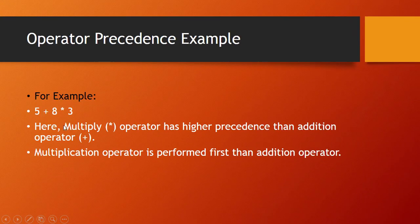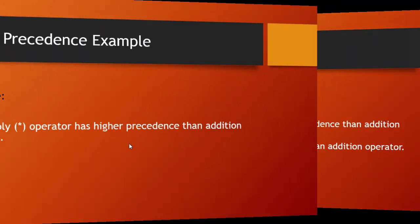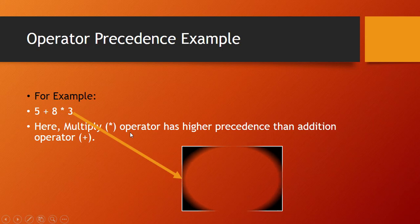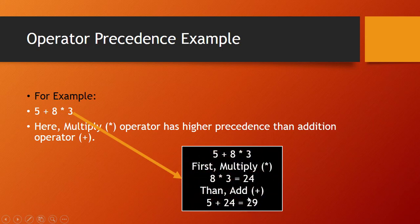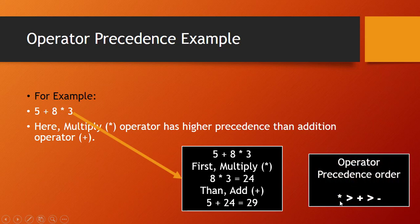Here we have two operators: the multiplication operator (star) and the plus operator. The multiplication operator has higher precedence than the plus operator. So first we perform multiplication, then addition. We multiply 8 by 3, which gives 24, then add that result to 5, giving the answer 29. This is because the multiplication operator has higher precedence than the plus operator.